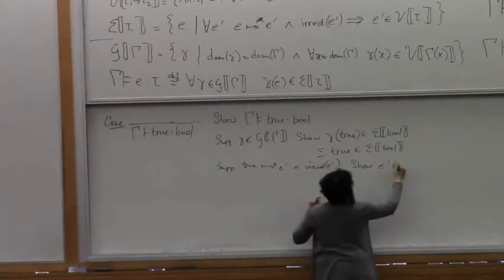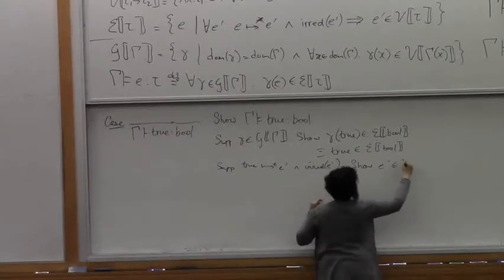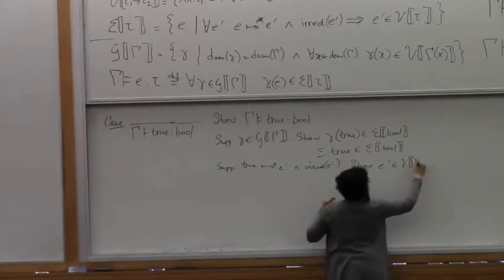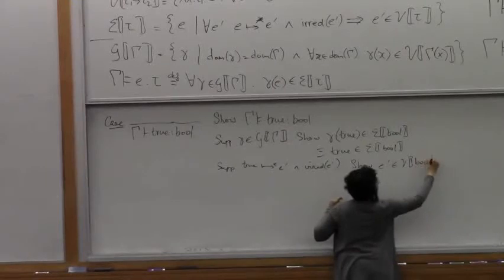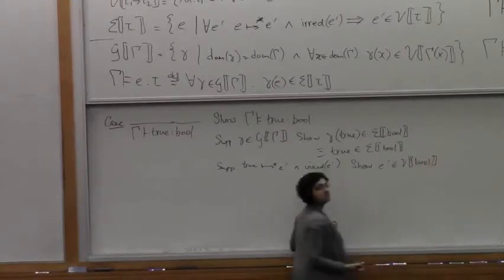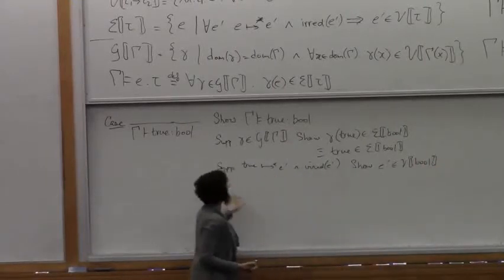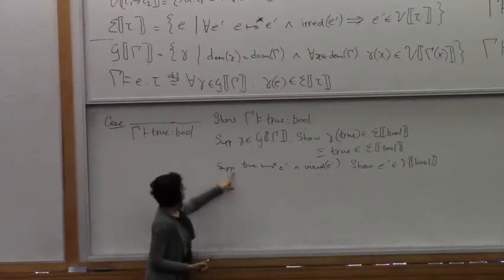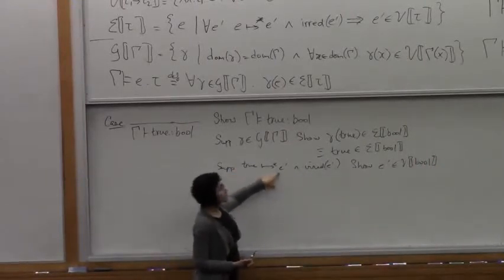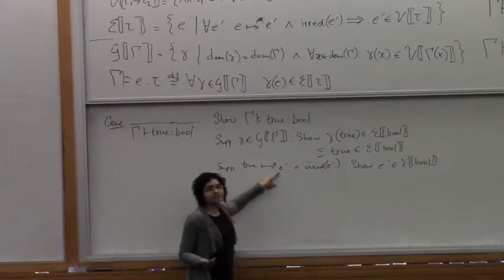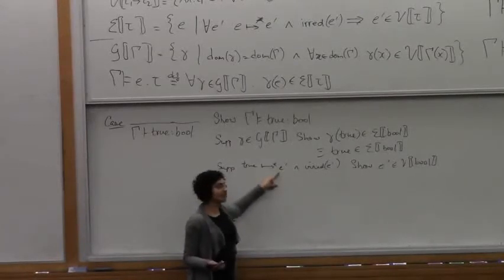E prime is in V of bool. We know that true steps to some E prime, but true is a value already. So E prime must be true itself.